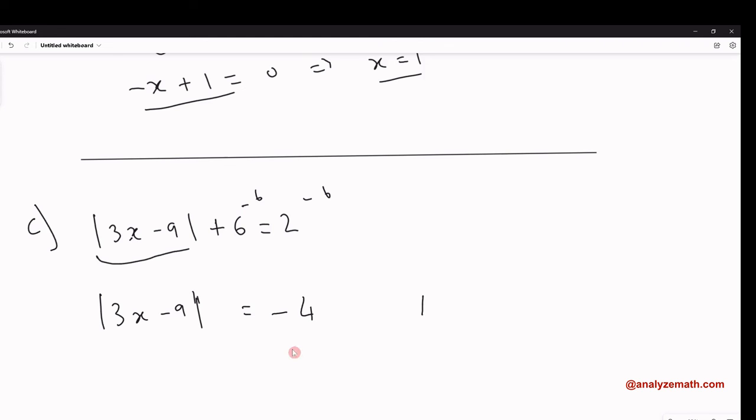Here there is automatically no solution. Why? Because the absolute value is never negative. Remember, it's a distance from 0 to x. It equals x when x is positive, and equals negative x when x is negative. Therefore, the absolute value is always positive or zero. So here, no solution.